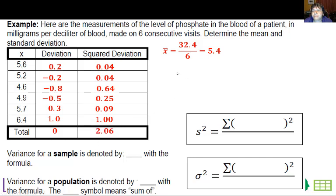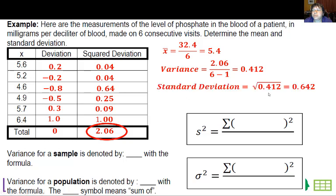To calculate the variance, I'm going to divide this by the sample size minus 1. I get the variance, which is 0.412. To get the standard deviation, we take the square root of that number, and I get 0.642.